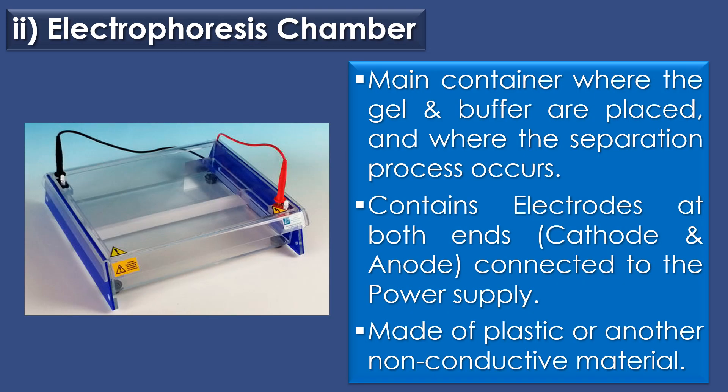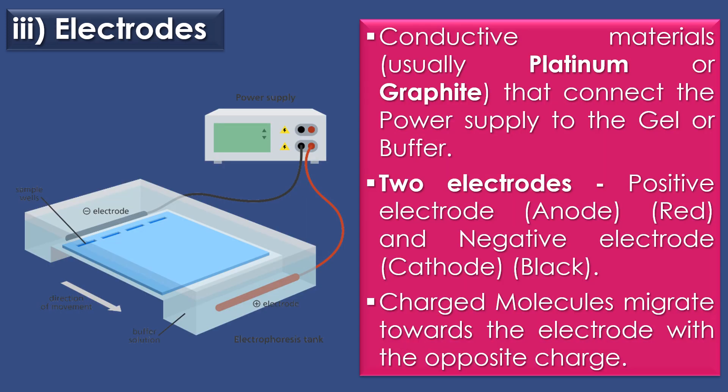The second component is the electrophoresis chamber. The electrophoresis chamber is the main container where the gel and buffer are placed and where the separation process occurs. It contains electrodes at both ends — anode and cathode — which are connected to the power supply, and is typically made of plastic or another non-conductive material.